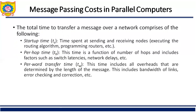The second factor is per-hop time, indicated by th. This is the time which is a function of the number of hops and includes factors such as switch latency, network delays, etc. The third factor is per-hop per-word transport time, indicated by tw. This includes all overheads determined by the length of messages, such as bandwidth of links, error checking and correction, etc.